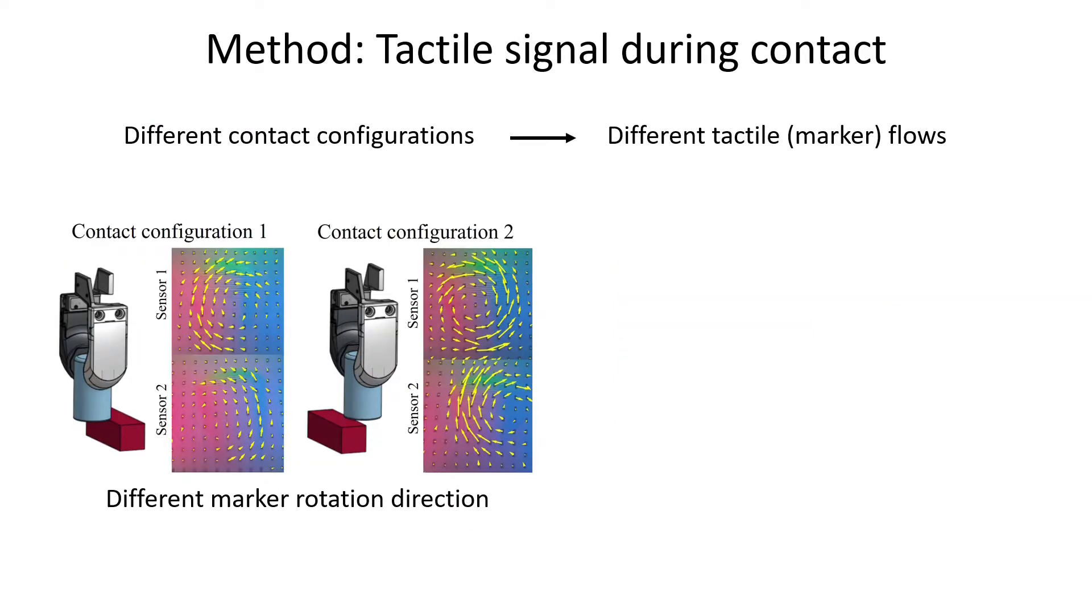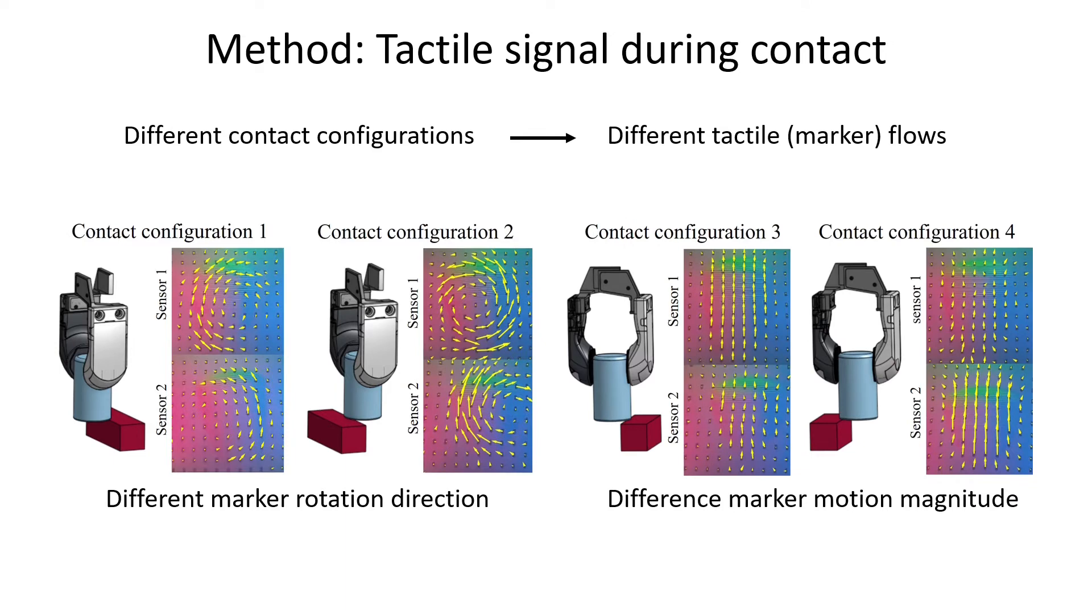Different contact configurations generate different tactile flows during the contact. For example, in these two contact configurations, it generates different marker rotation directions, and in these two cases, it generates different marker motion magnitudes.